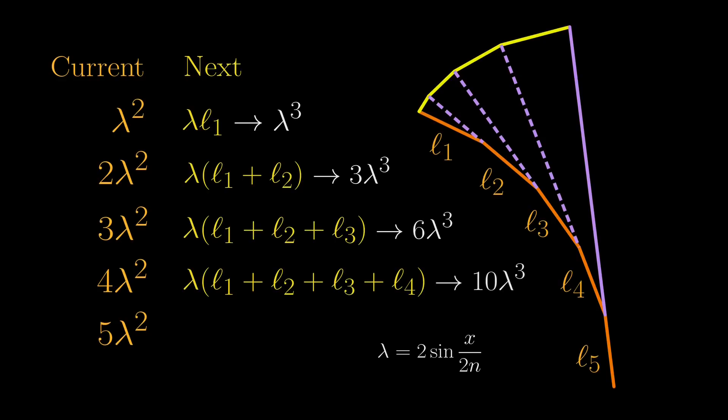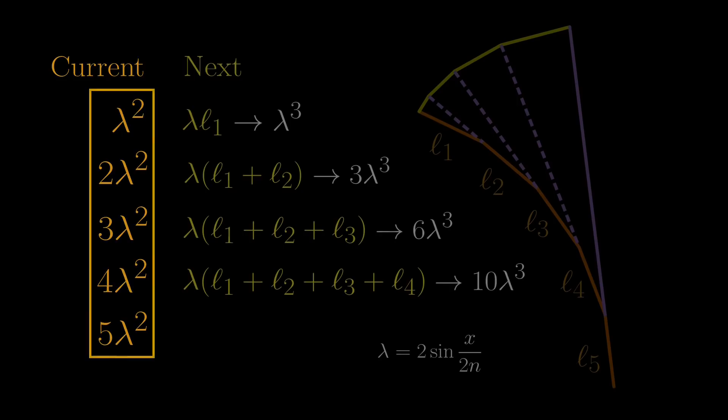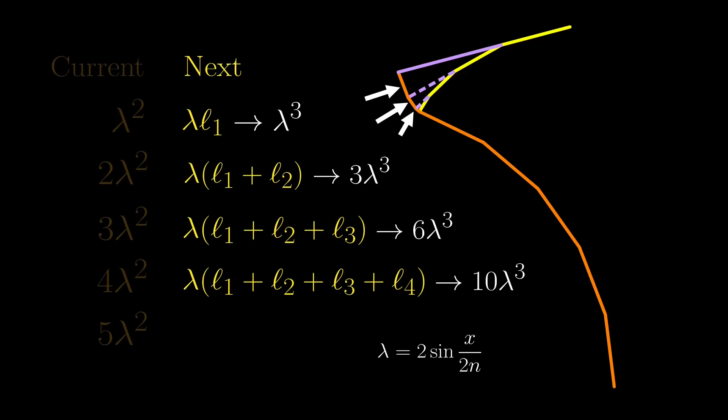Again, what we are doing is that if the current involute has all these lengths, then the next involute would have these lengths, which is exactly the lengths of these segments here. But if we now only look at the coefficients, does it ring a bell? Maybe not, so here is the summary.